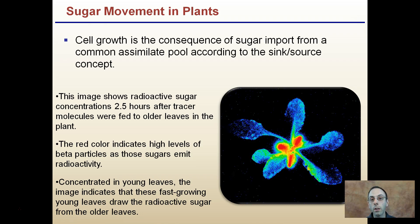Just because something is a leaf doesn't mean it's always a source cell. Young leaves are developing and actually consuming more sugars than they're initially producing. Ultimately, when they reach maturity, they will produce more and become a source for the plant, storing sugars in different sink cells such as tubers, fruits, or other regions. But initially, young leaves are actually a sink before they fully develop.